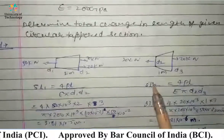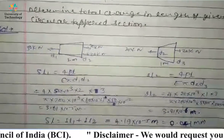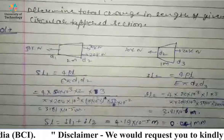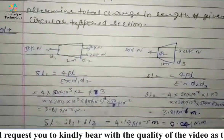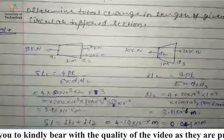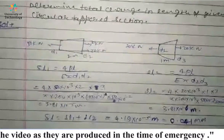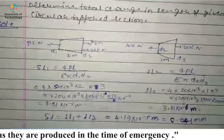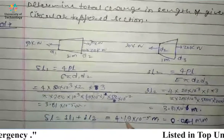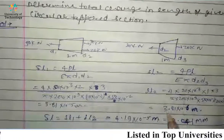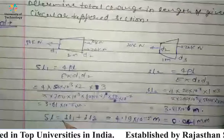We obtain the values of change in length for every composite tapered section. To find the total change in length, we add ΔL1 plus ΔL2. Adding these values gives us the total change in length ΔL for the tapered section.